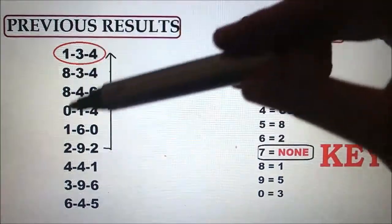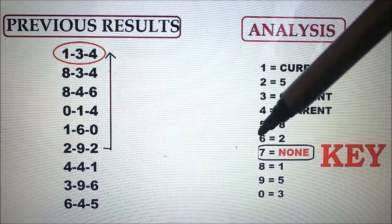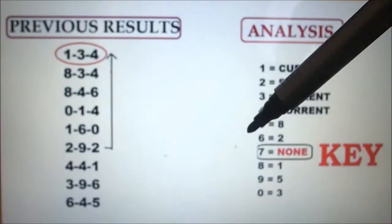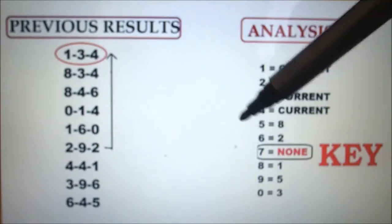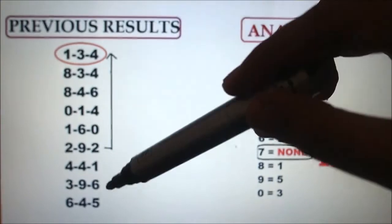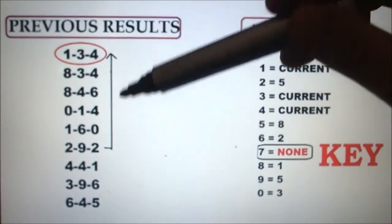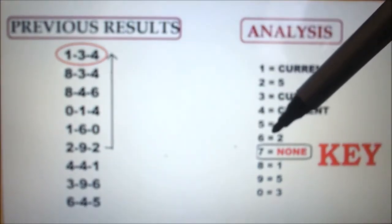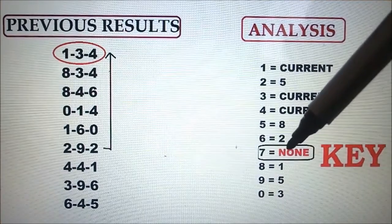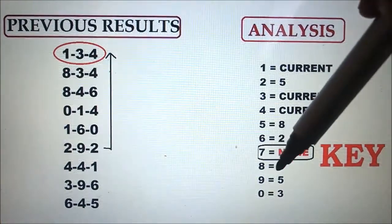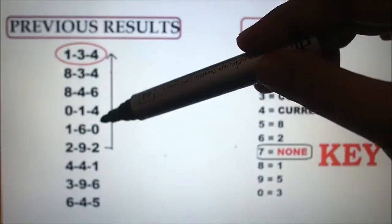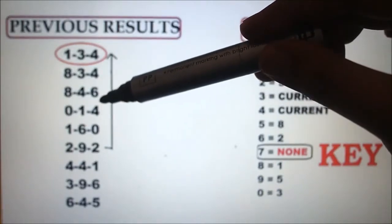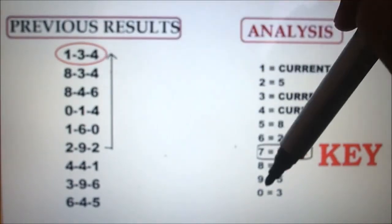By finding the key number, the key is the number that is next to be drawn. This is the purpose of the skip strategy formula and finding the key number. So on this previous result, seven is not present, so automatically the number 7 is our key number. Eight, one. Nine, five. Zero, three. Zero upward, 1, 2, 3, so zero, three.